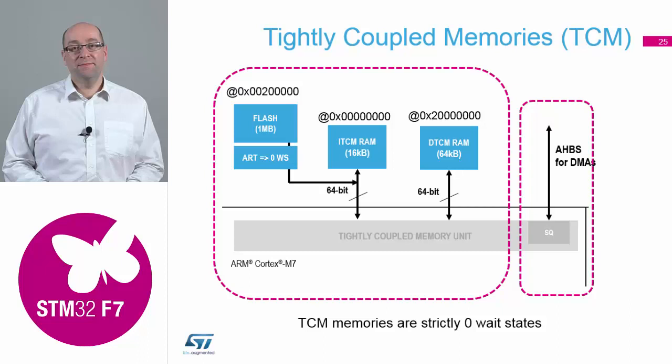We have the main flash array, as we have in the F429. This is connected through the ART accelerator to provide zero wait-state feed directly into the core. The only difference compared to the F4 is we've changed the bus width from 32 to 64-bit, so we're now feeding the core with 64-bit instructions to handle the dual-issue features of the device.